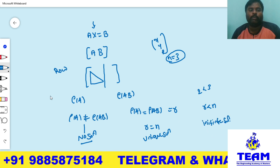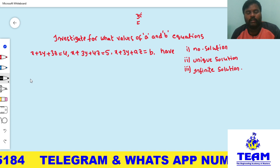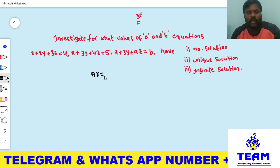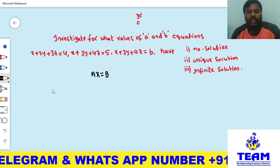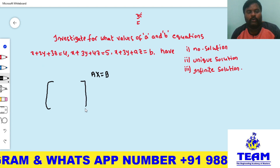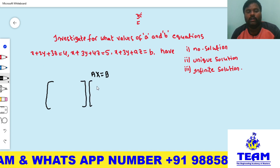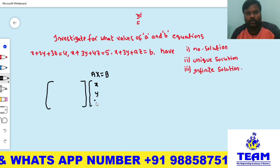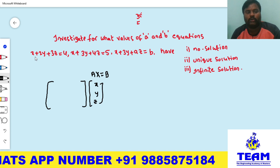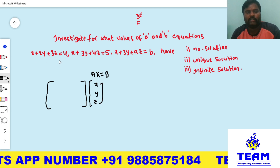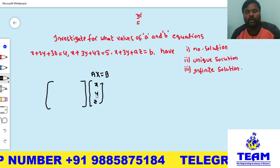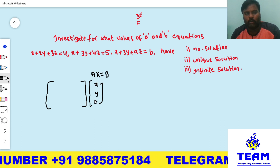Now coming to the problem. We write the system of linear equations in matrix notation, i.e., in the form AX = B, where A is the coefficient matrix. The unknown matrix X contains the variables x, y, z — which appear in all three equations. So n = 3 unknowns.